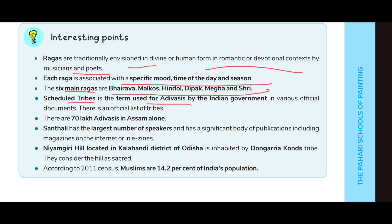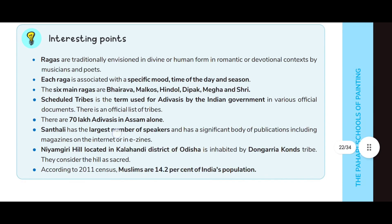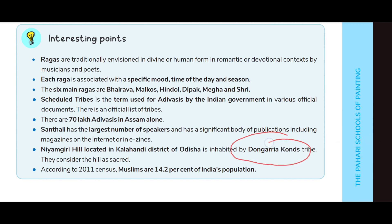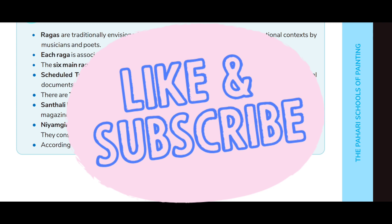Scheduled Tribes is the term used for Adivasis by the Indian government in various official documents. There are about 70 lakh Adivasis in Assam alone. Santhali has the largest number of speakers and has a significant body of publications including magazines on the internet. Niyamgiri Hill, located in the Kalahandi district of Odisha, is inhabited by the Dongaria Kondh tribes, who consider the hill sacred. According to the 2011 census, Muslims are 14.2 percent of India's population.